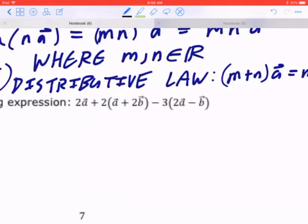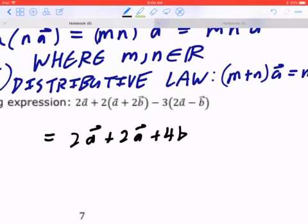All we're doing is we're expanding this. If you pretend 2 times vector a is just 2a, like you did in the past, then that's how you do it. So, you write down 2a plus 2a plus 4b minus 6a plus 3b.